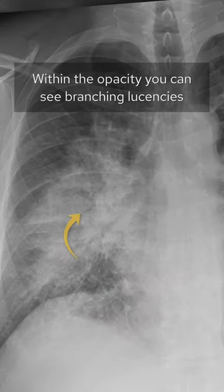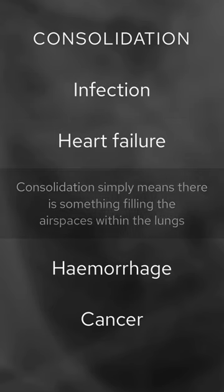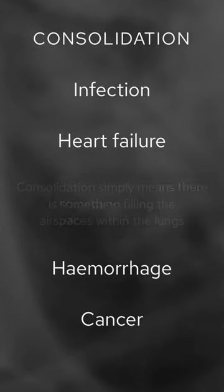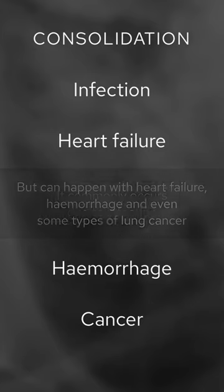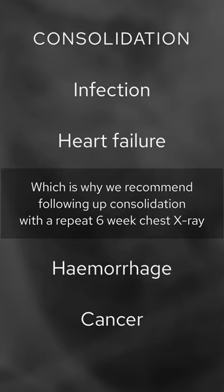Within the opacity you can see branching lucencies. These are called air bronchograms and mean there is consolidation. Consolidation simply means there is something filling the air spaces within the lungs. It commonly occurs due to infection, but can happen with heart failure, hemorrhage, and even some types of lung cancer — which is why we recommend following up consolidation with a repeat six-week chest x-ray.